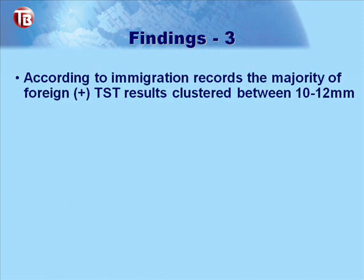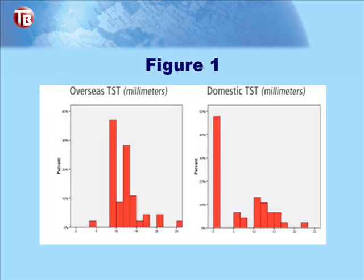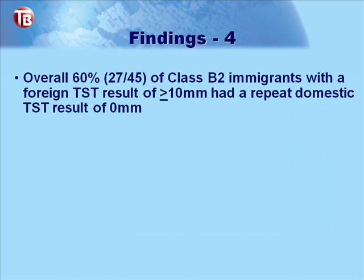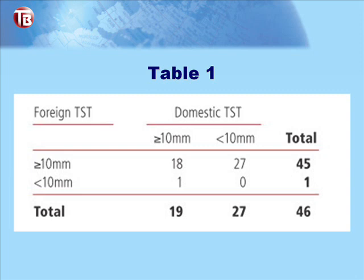According to immigration records, the majority of foreign TST results clustered between 10 and 12 millimeters. The overseas results show the cluster at 10 to 12 millimeters, while the domestic TST results show the cluster dissipating, with the majority of patients now at zero millimeters. Overall, 27 of 45 — or 60 percent — of Class B-2 immigrants with a foreign TST result of 10mm or greater had a repeat domestic result of zero millimeters. Of those 45 individuals with greater than 10mm TSTs, 18 remained greater than 10mm domestically, but 27 were now zero millimeters. There was also one case where the foreign TST was less than 10mm but was read as greater than 10mm at the domestic clinic, showing discordance on both ends. The overall TST discordance from foreign to domestic was 60 percent.